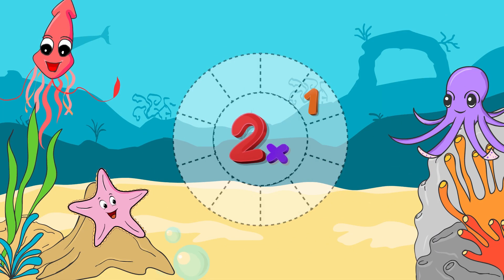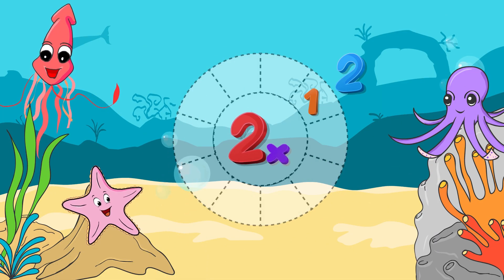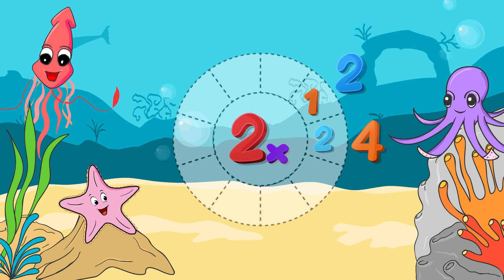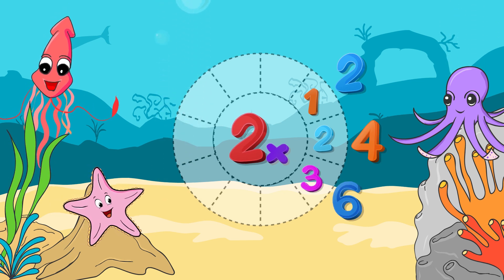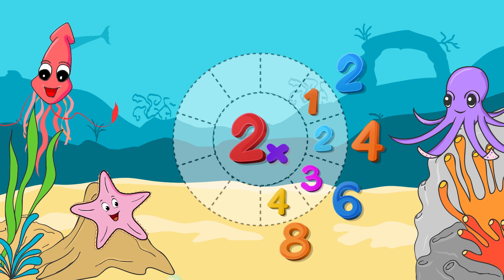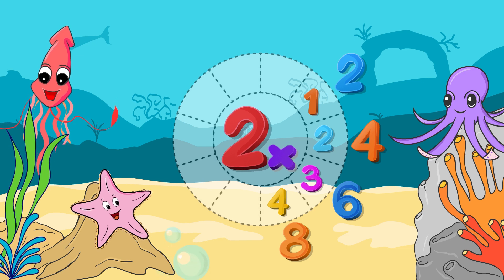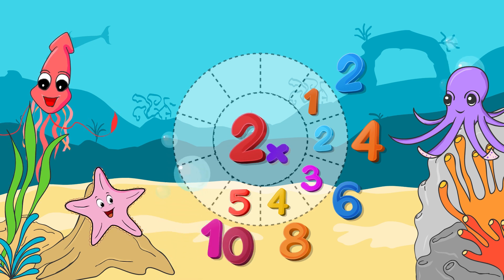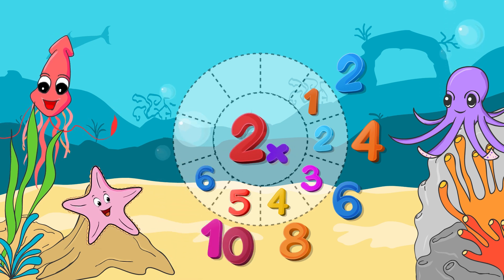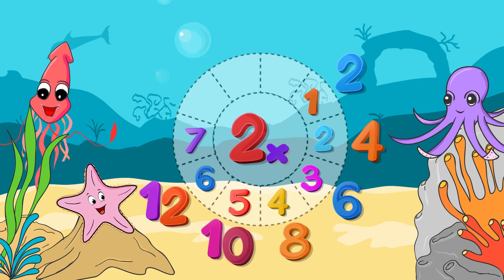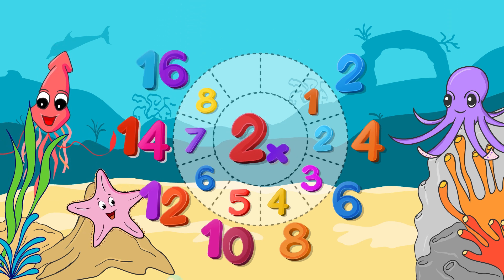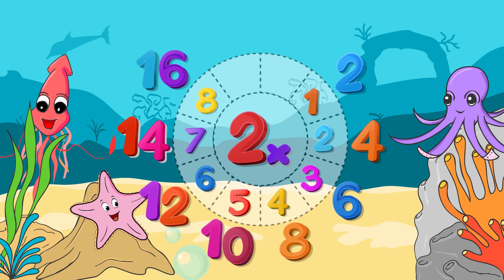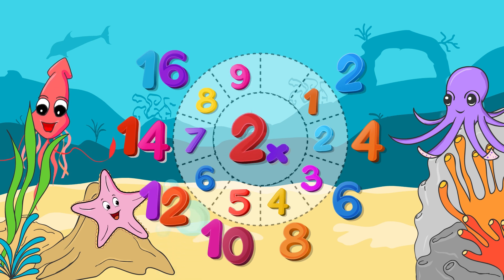Repeat again. 2 1's are 2, 2 2's are 4, 2 3's are 6, 2 4's are 8, 2 5's are 10, 2 6's are 12, 2 7's are 14, 2 8's are 16, 2 9's are 18.